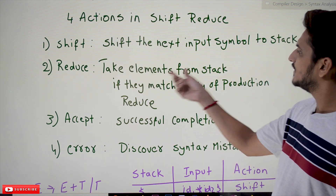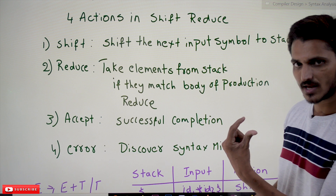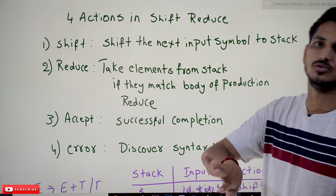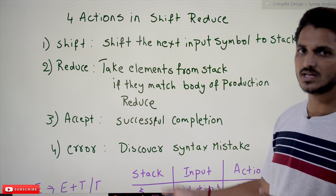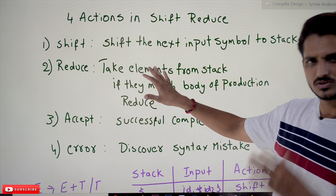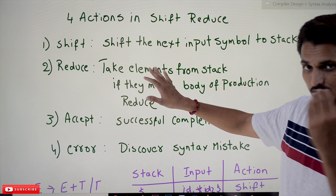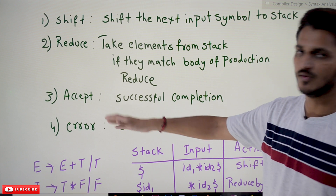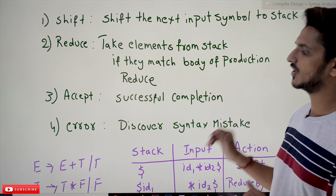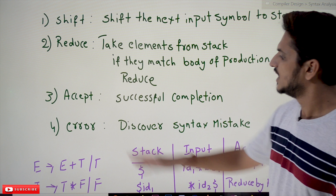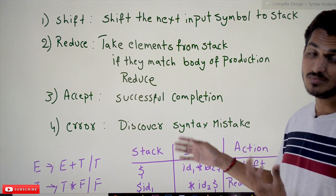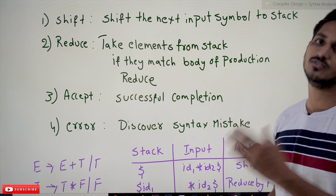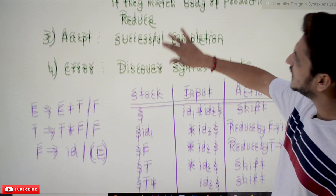Reduce means: take elements from the stack, and if they match the body of a production, then reduce. With an example you will get clarity on what reduce means. The third action is accept — whether the string is successfully completed or not. The fourth action is error — if there is any mistake in the syntax, you have to identify it. These four actions are performed in shift-reduce parsing.